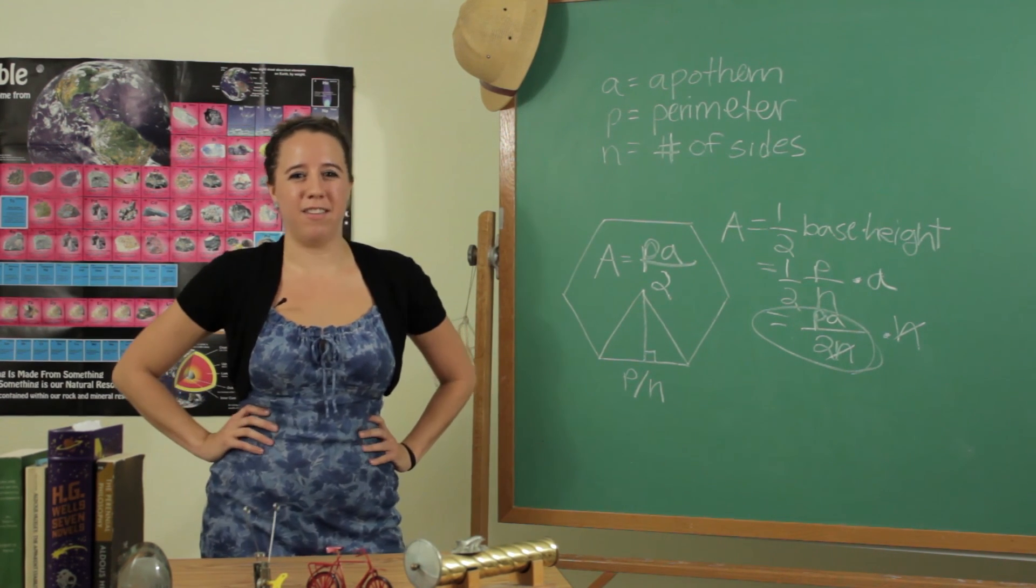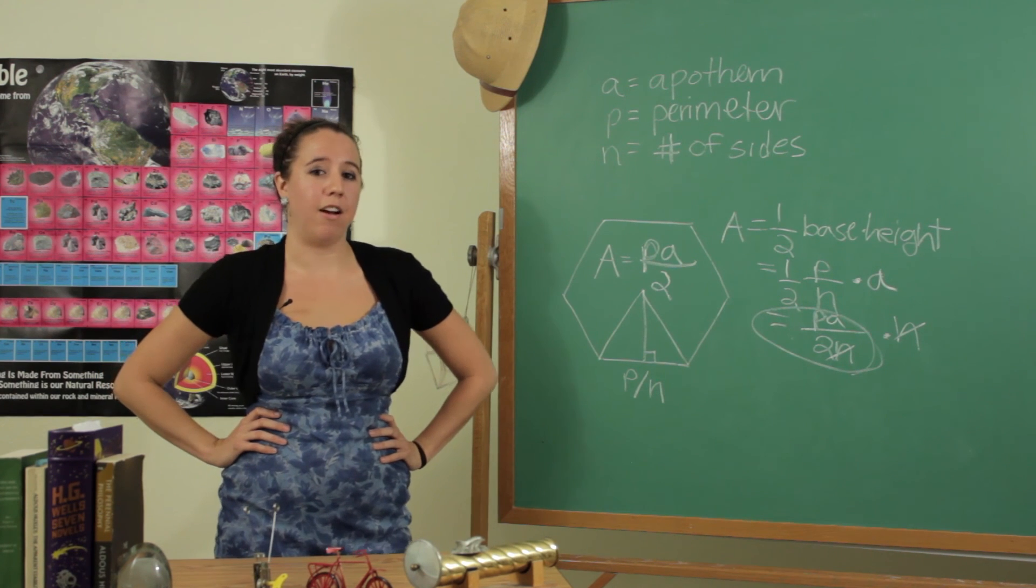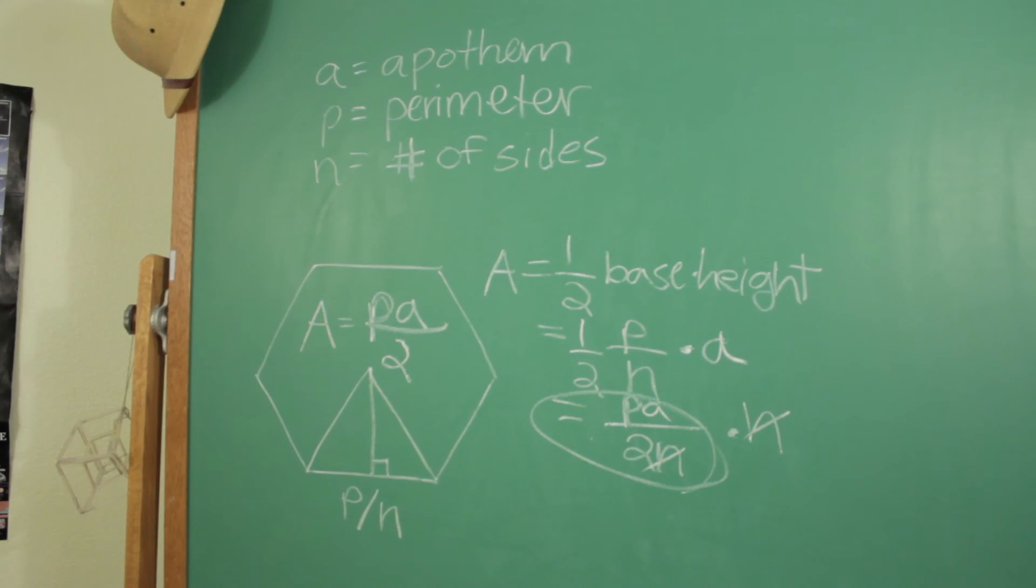So I'm Kristen Oviedo and this is the formula for finding the area of a regular polygon when the perimeter and apothem are given.